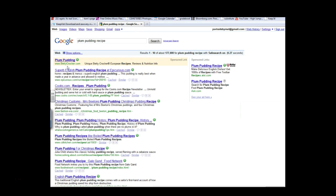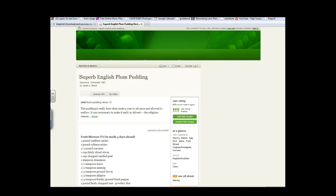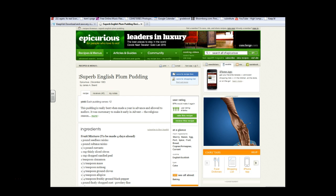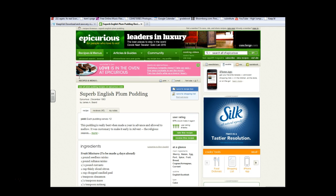For all of you that care, let's see here. I've found some plum pudding recipe just so you'll know exactly what we're talking about. Superb English plum pudding: one pound seedless raisin, one pound sultan raisins, one half pound currants, one cup thinly sliced citron, one cup chopped candied peel, one teaspoon cinnamon, a half teaspoon of mace.